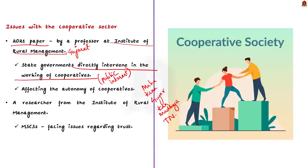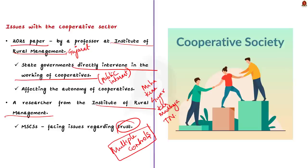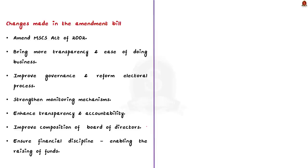The second major issue is that multi-state cooperative societies were formed to ease operations throughout the country, but a researcher from the Institute of Rural Management points out that MSMEs are facing trust issues. Trust is the very basis of cooperation, and this trust deficit has brought multi-state cooperative societies under multiple controls from the central government. These two — state government intervention and central government controls due to trust issues — are the main challenges faced by multi-state cooperatives.